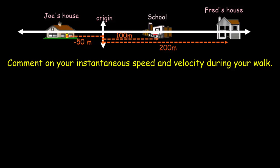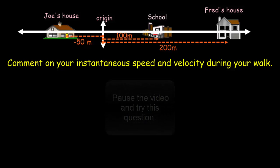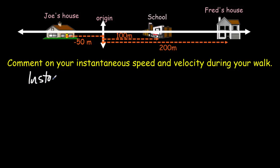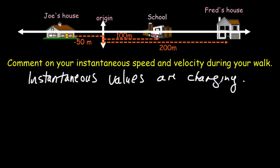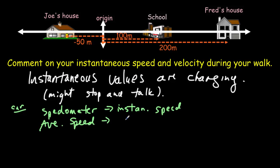Now let's think about instantaneous speed and instantaneous velocity — how are they different from average values? Instantaneous values are changing moment to moment. On a walk you might stop and talk to somebody or slow down going up a hill. Think of a car trip: your speedometer measures instantaneous speed, while average speed comes from taking the trip odometer reading divided by the total time. The odometer simply measures the distance traveled on a trip.